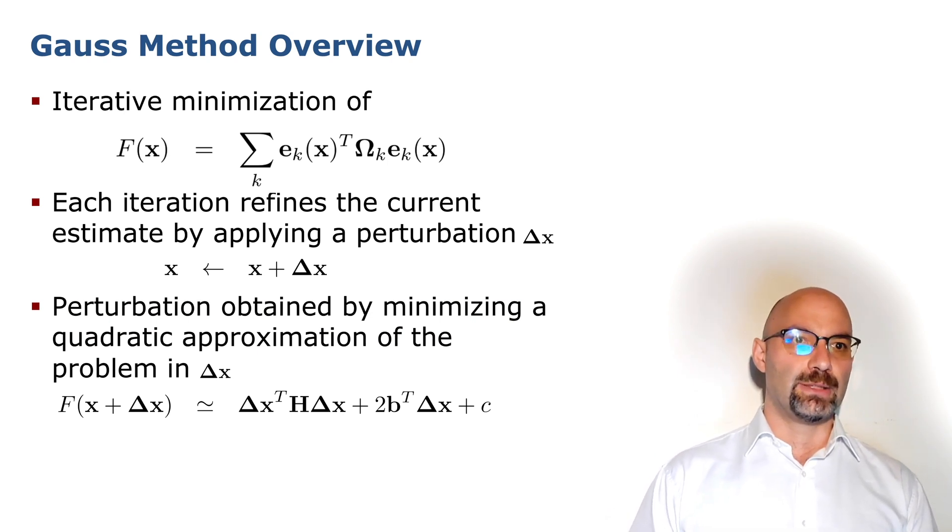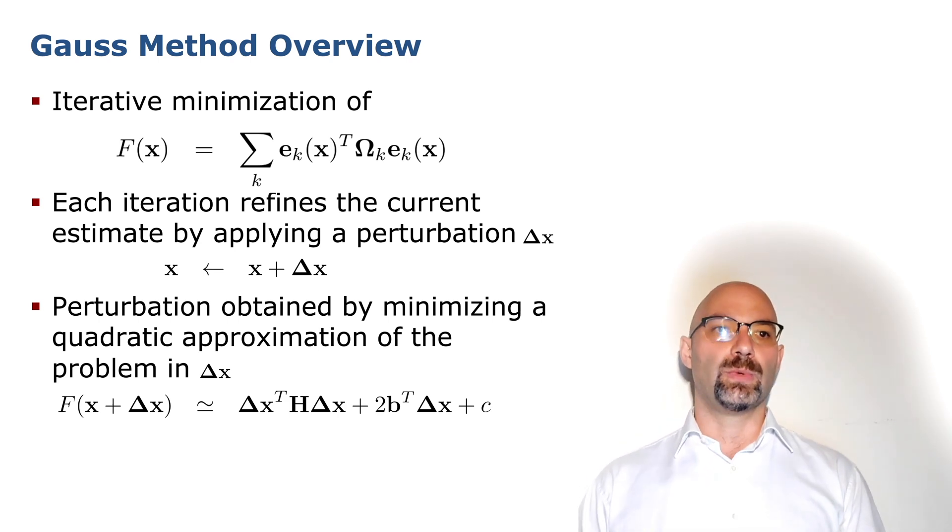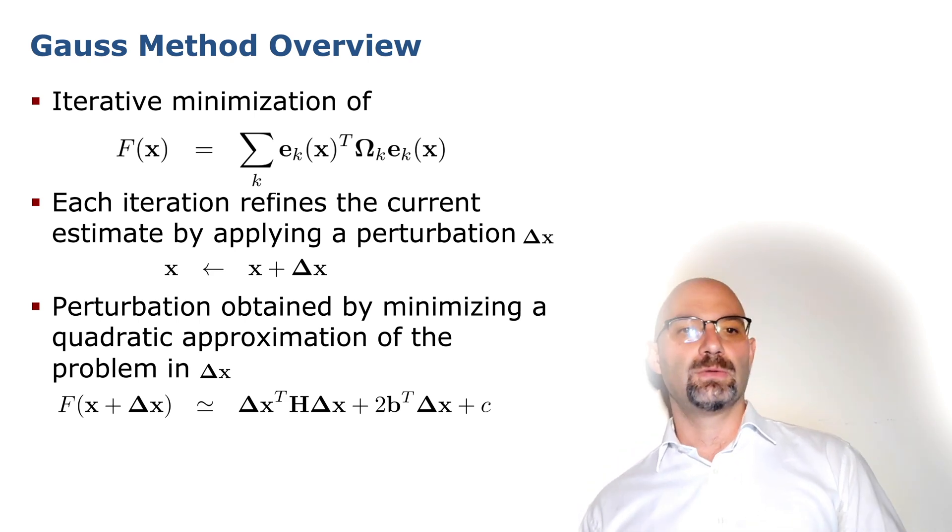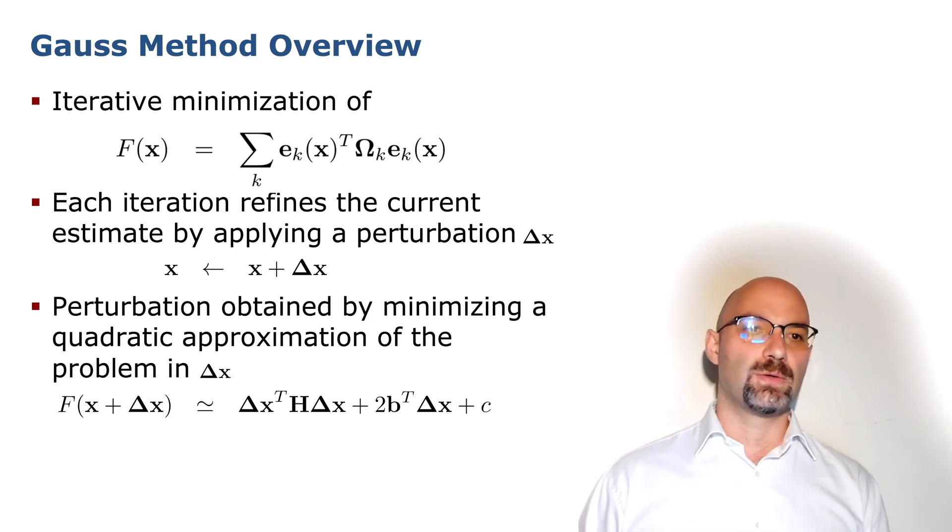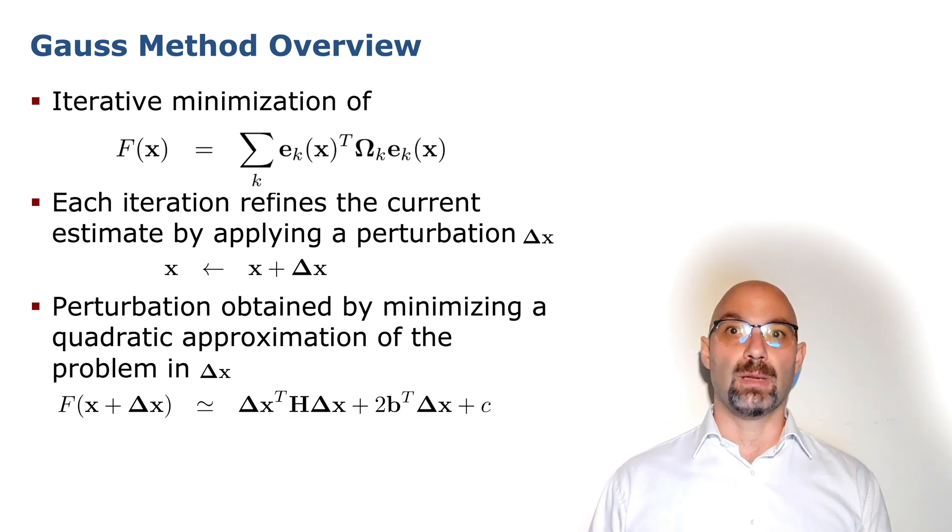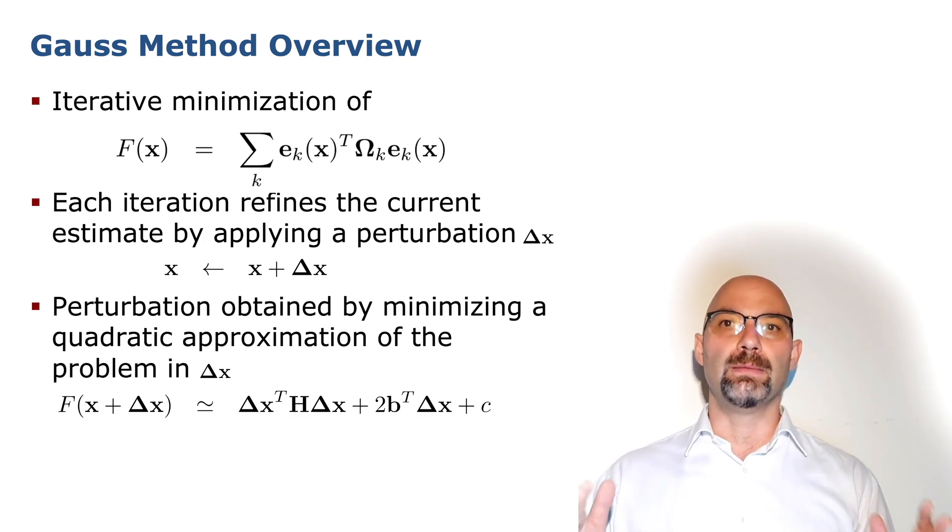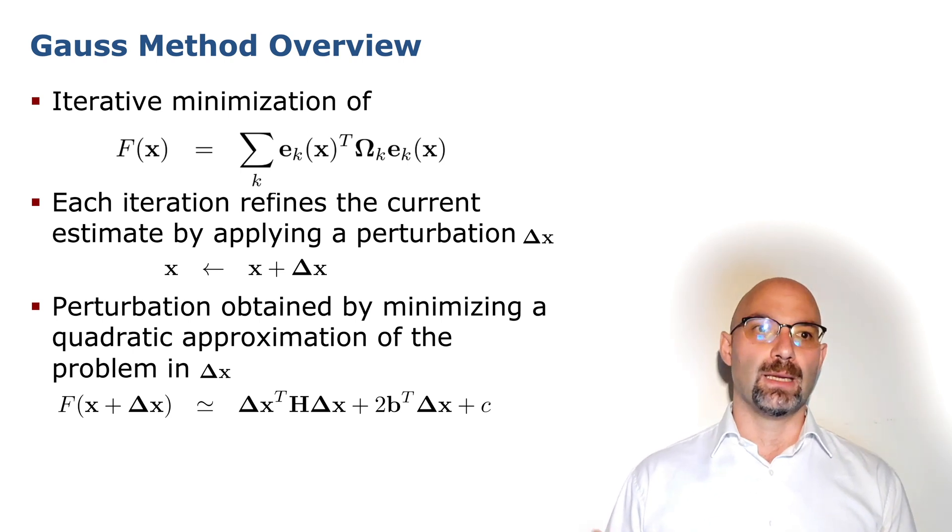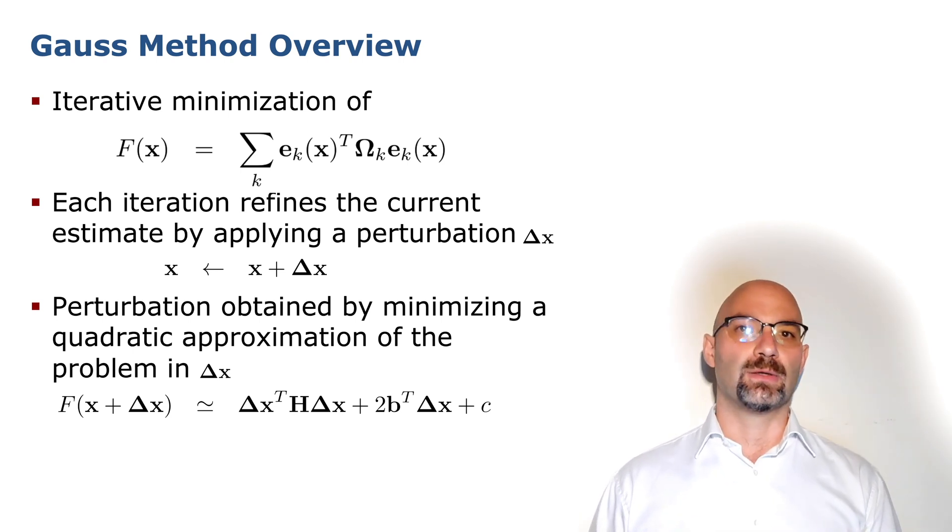One aspect, which is the prediction, which is obtained by calculating the relative displacement between the two poses. And the second aspect is the actual measurement. We clearly see that whenever the prediction, so the relative estimate between the two poses, is exactly the same as the measurement, then this error vector is zero. So this tells us that our optimization problem is at least formally well-posed. We observe that the shape of the error function, of the global cost function that we want to minimize, is characterized by many local minima.